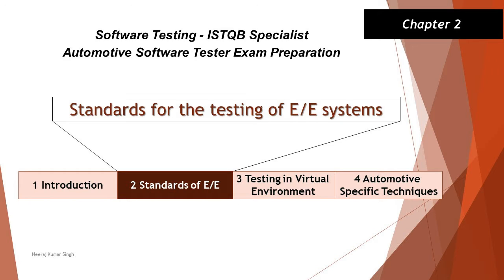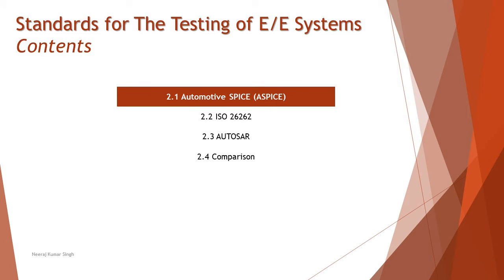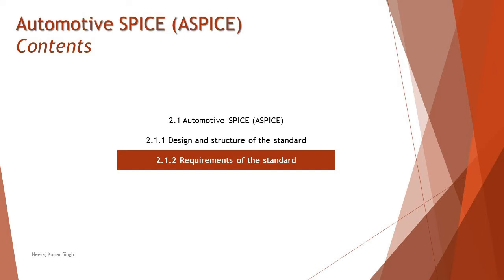Hello friends and greetings for the day. Welcome back to another tutorial on ISTQB specialist automotive software tester. As part of this tutorial we are still in chapter 2, talking about standards — specifically the first topic, Automotive SPICE, and the second part: section 2.1.2, requirements of the standard. This is the third part of this segment, so if you've missed parts 1 and 2, please go through those before continuing.